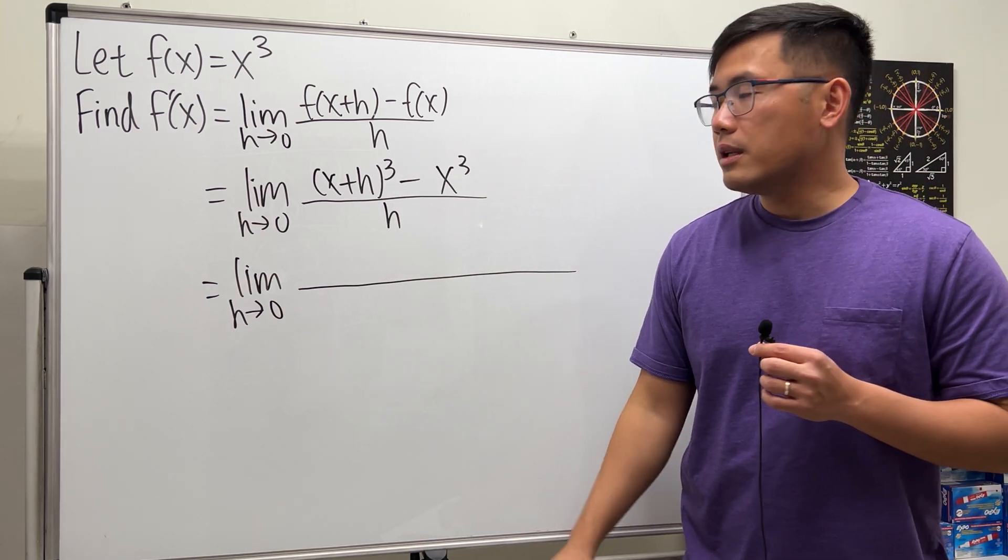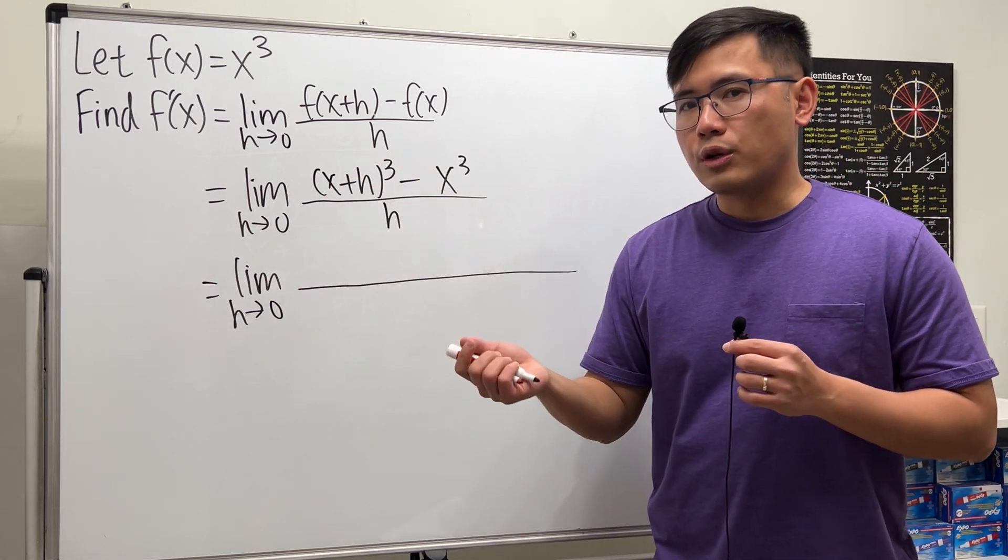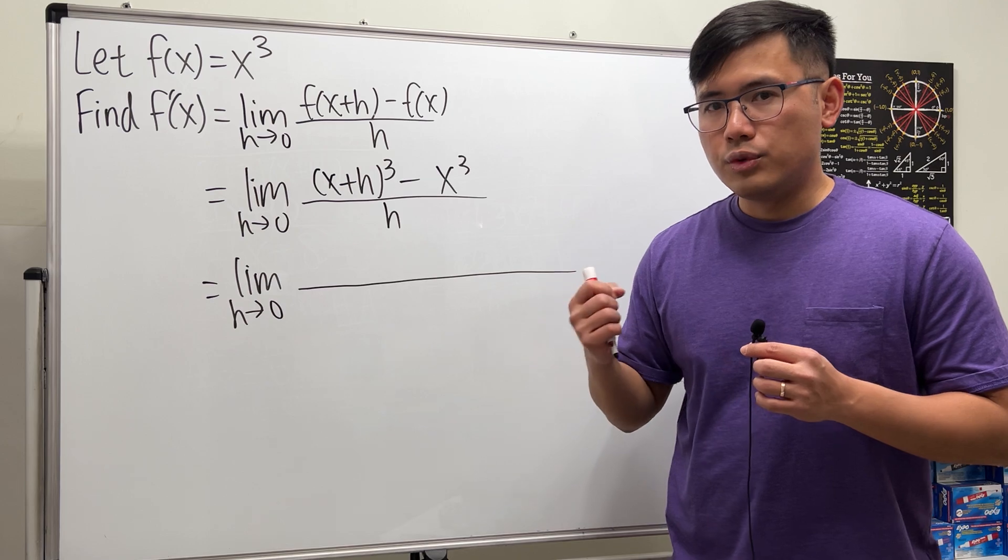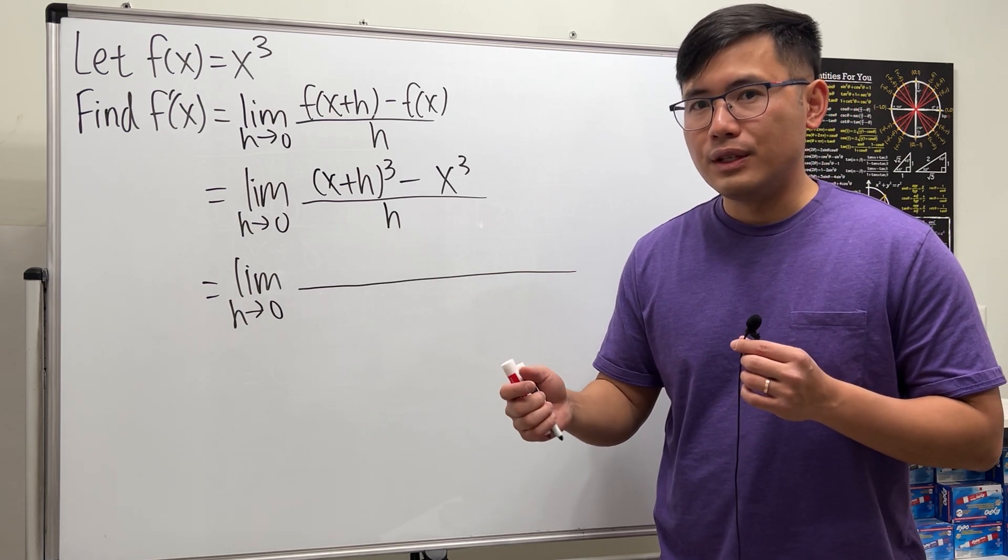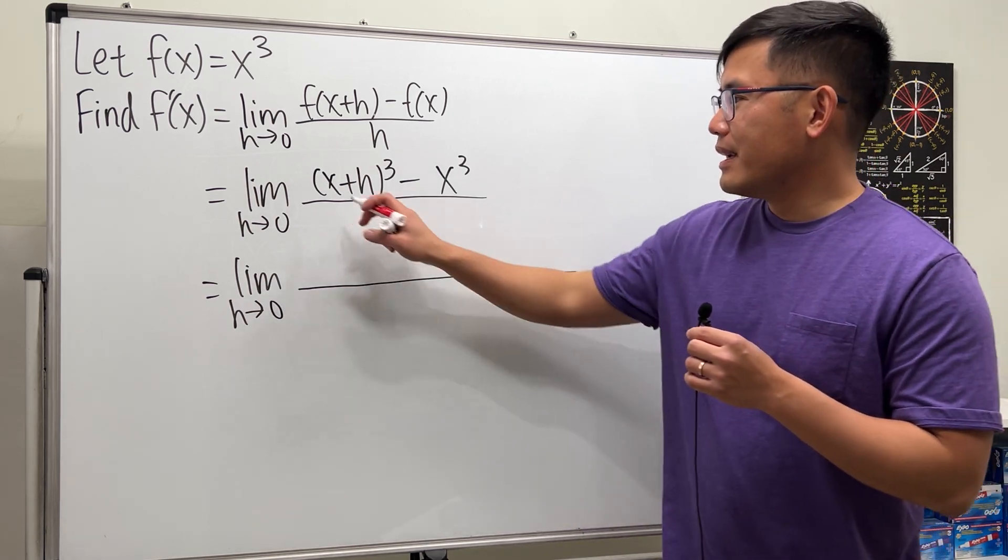Let me just once again write down the limit as h approaching zero. Right here we can use the binomial expansion. This is the third power, so the coefficients are one, three, three, one. And if you want to see more details, I will have another video in the description for you guys.